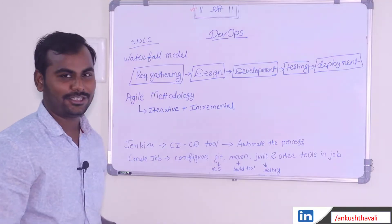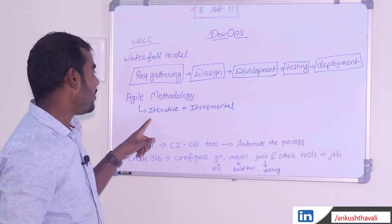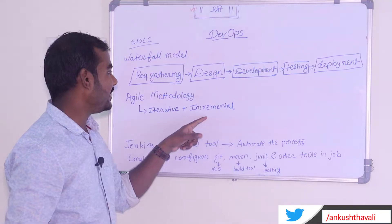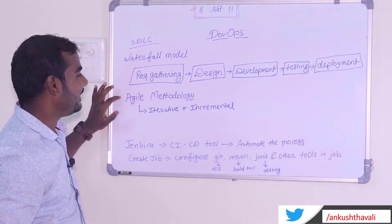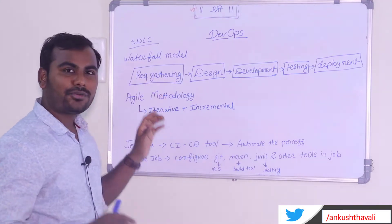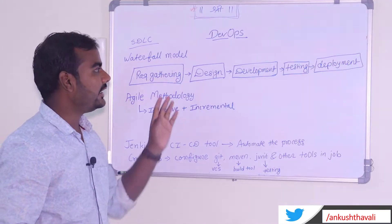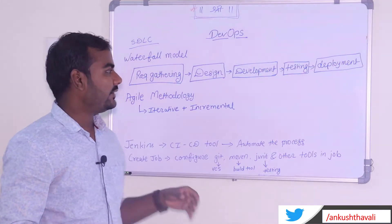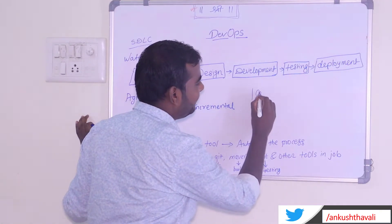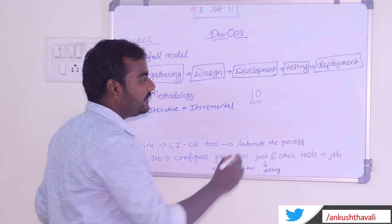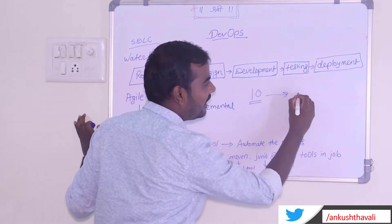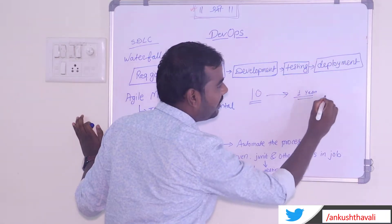Agile methodology follows the iterative and incremental model. In the Waterfall model, whenever we produce a product, we deliver it only after deployment. Let's say your client asks you to create 10 features — in Waterfall you do requirement gathering, designing, development, testing, and after one year you give him all 10 features at once.